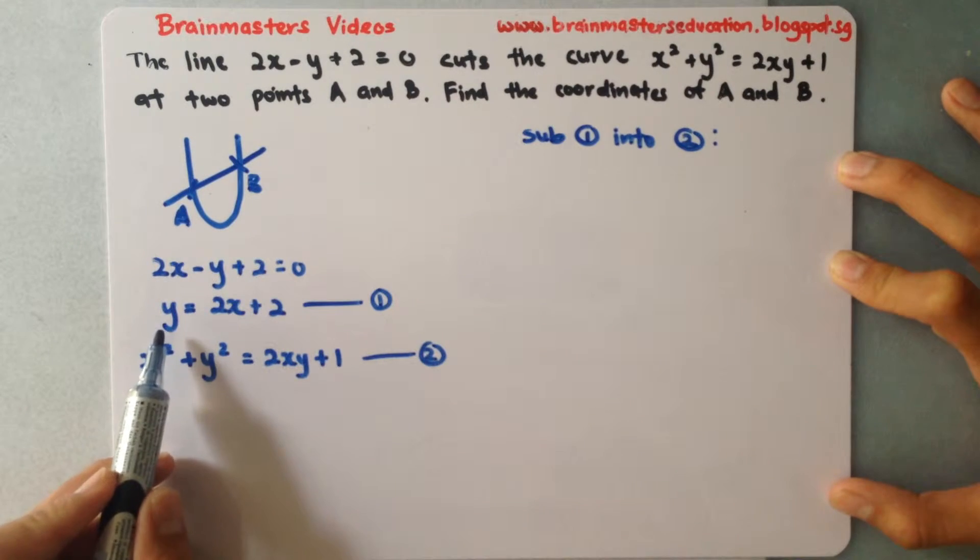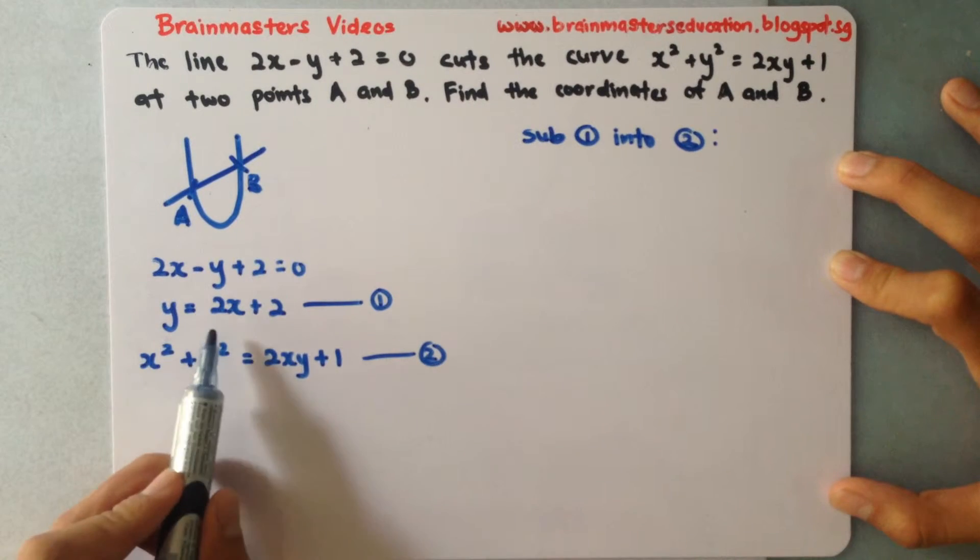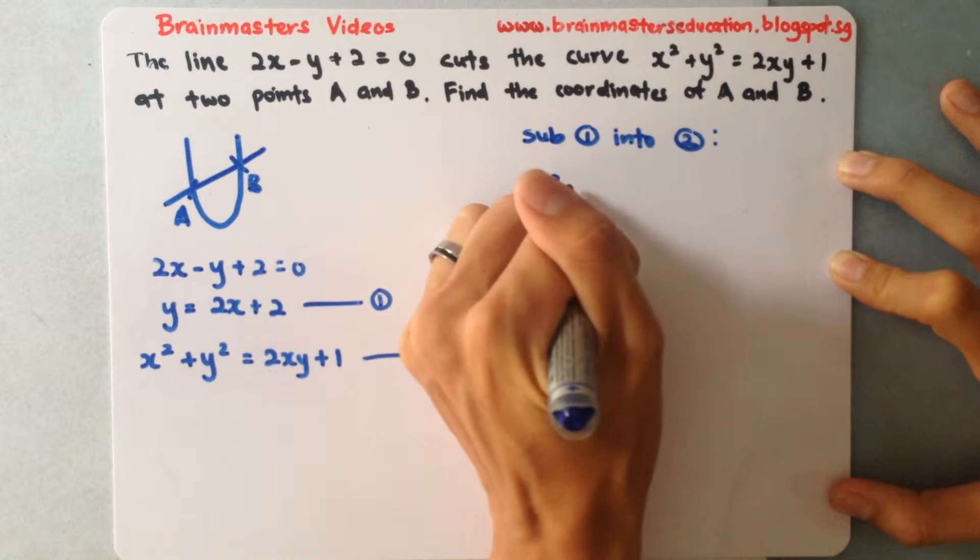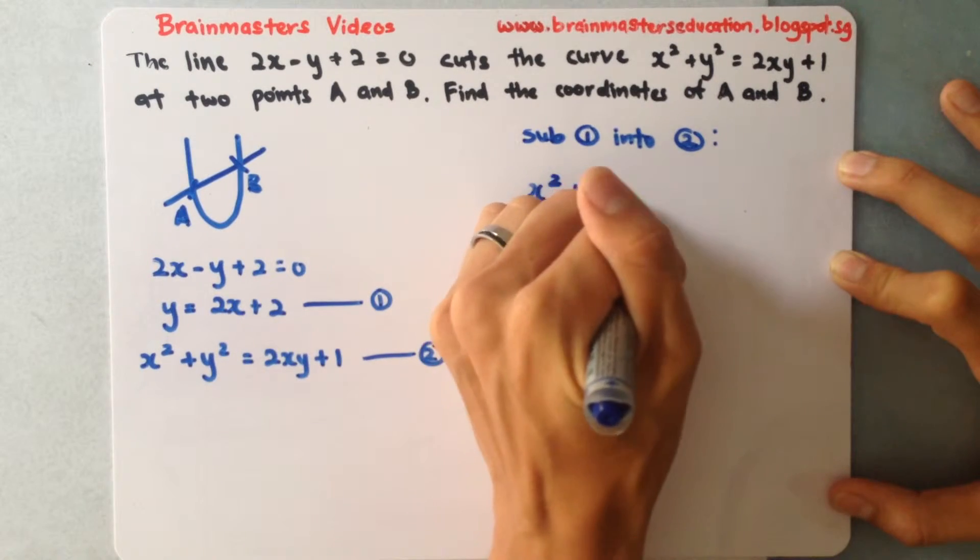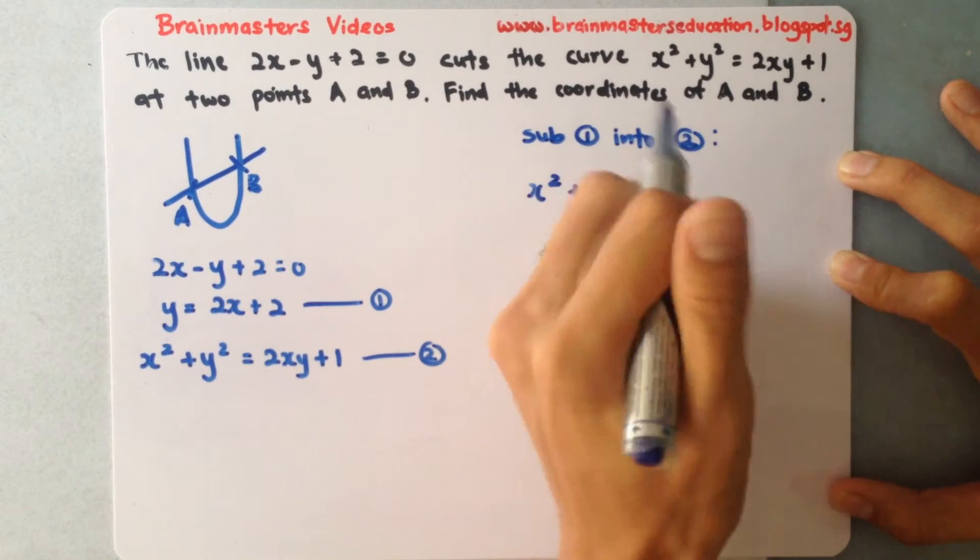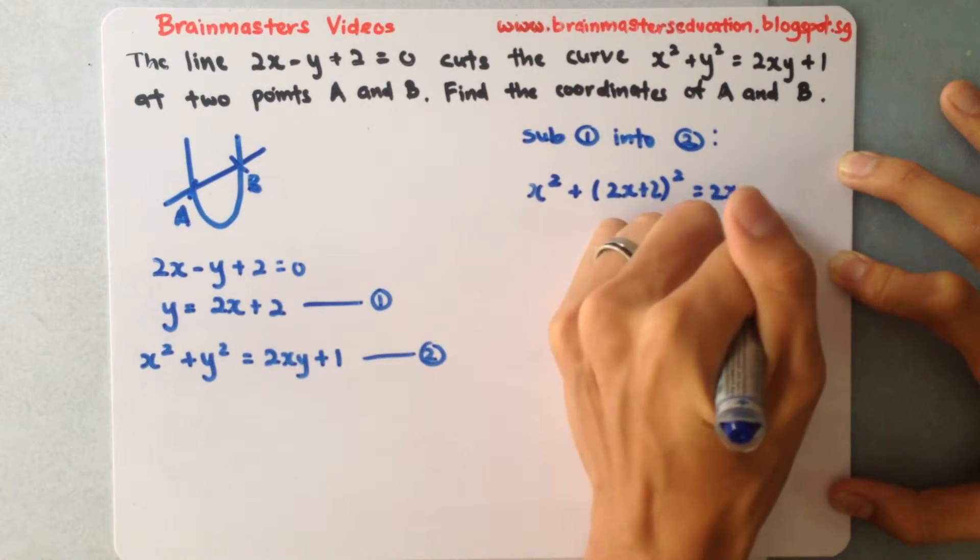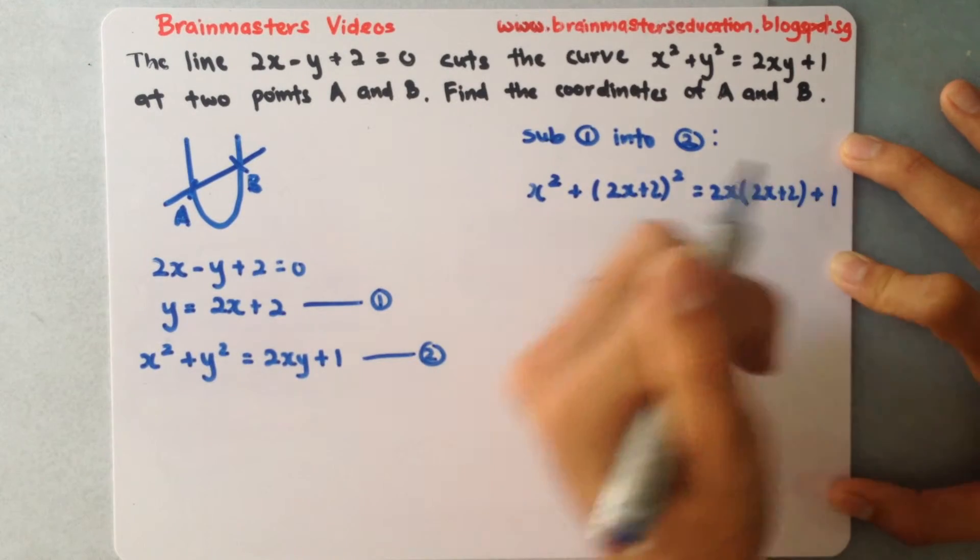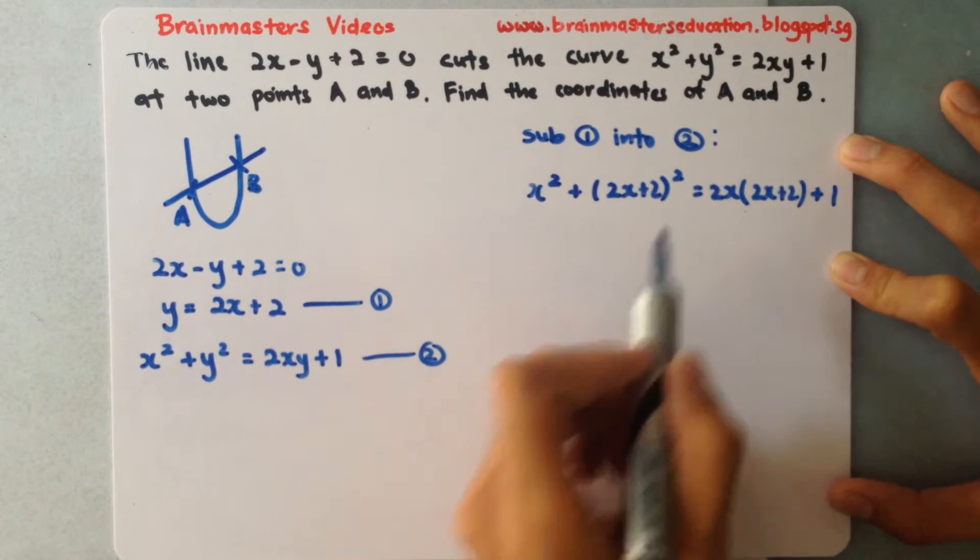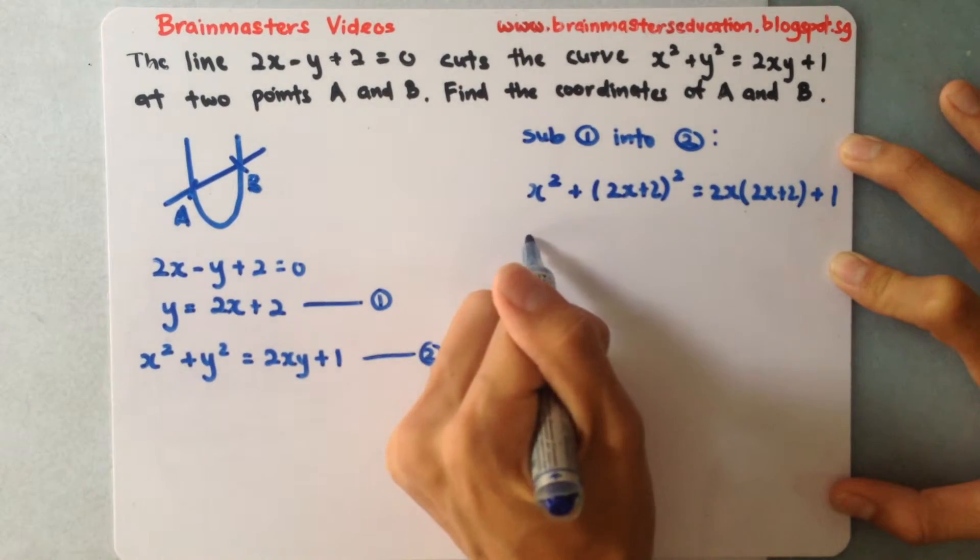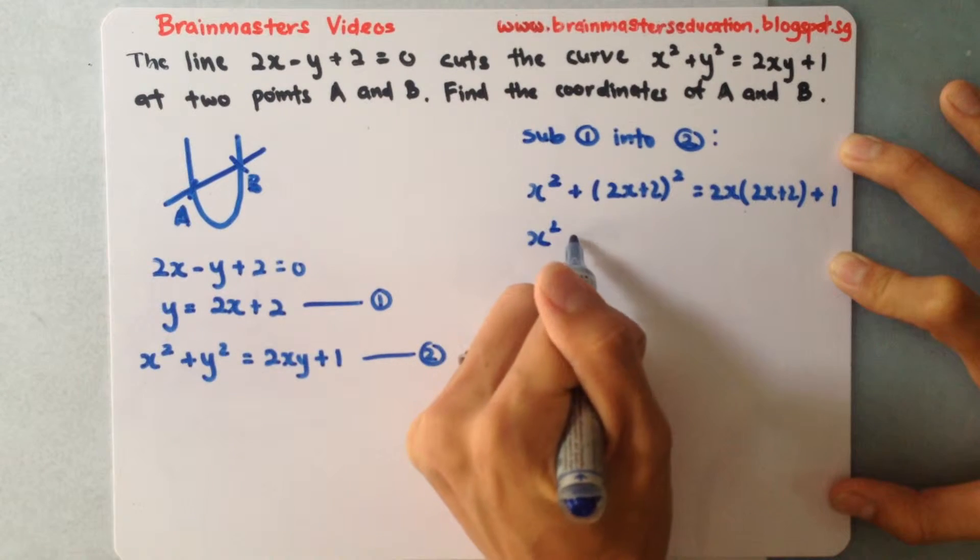So whenever I see a y in this equation, I'll change it to 2x plus 2. So this is what I'll be having. Okay so now over here I will need to expand this. So I need to simplify this form.